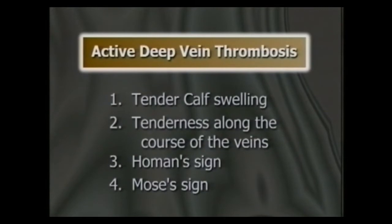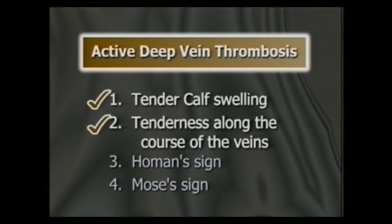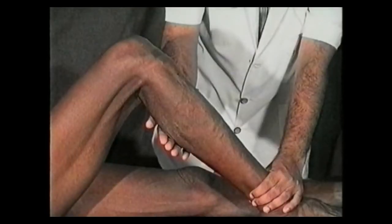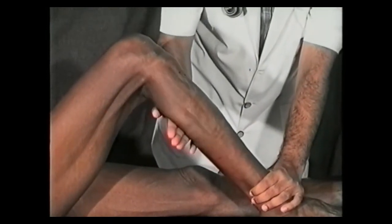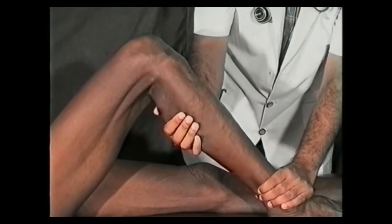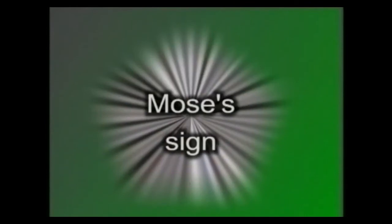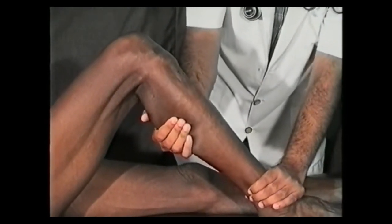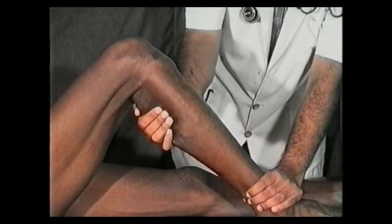Now we will look for active deep vein thrombosis. Look for tender swelling of the calf. Palpate for tenderness along the course of the femoral vein, popliteal vein and over the calf muscles for the posterior tibial veins. To test for tenderness over the deep veins of the calf, flex the knee to 90 degrees to rest the foot on the table and press the calf muscles against the tibia to compress the posterior tibial veins. If not tender, gently squeeze the calf muscles from side to side — if painful, this is a positive Moses sign. If the calf muscles are tender, do not perform the squeeze test, as it can potentially dislodge a thrombus and result in pulmonary embolism.